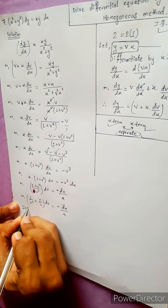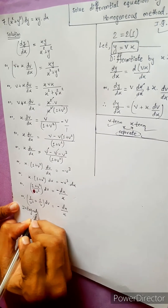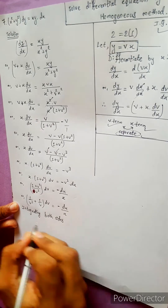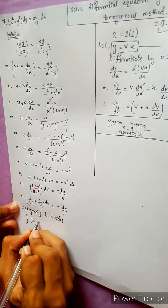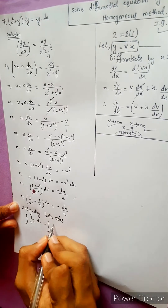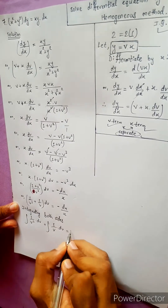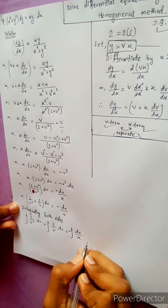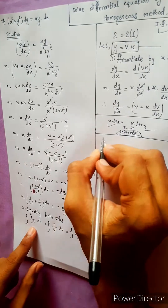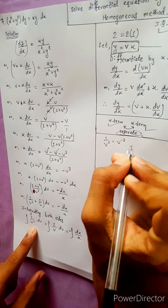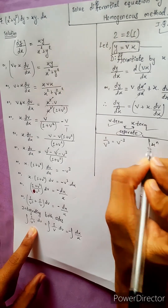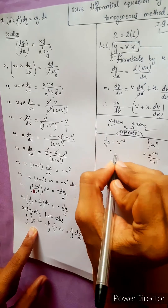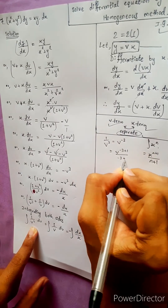Integrating both sides. Integration of 1 by v cubed dv plus integration of 1 by v dv equals to integration of negative dx by x. This is the formula: 1 by v cubed is v to the power minus 3. x to the power n integrated equals to x to the power n plus 1 divided by n plus 1. This equals to v to the power minus 3 plus 1 divided by minus 3 plus 1.